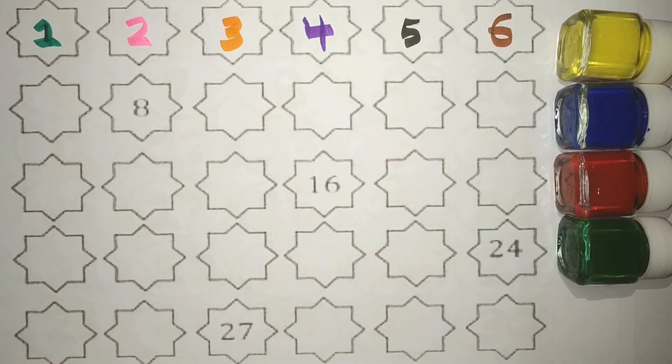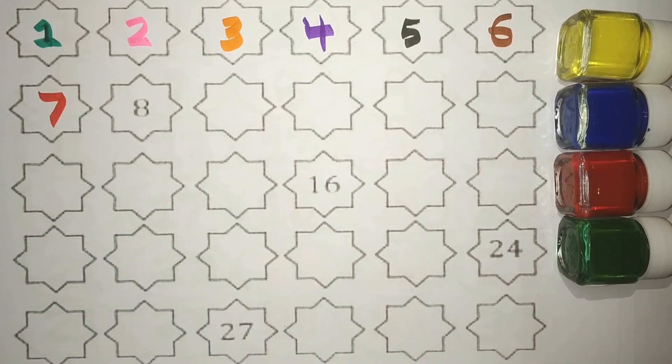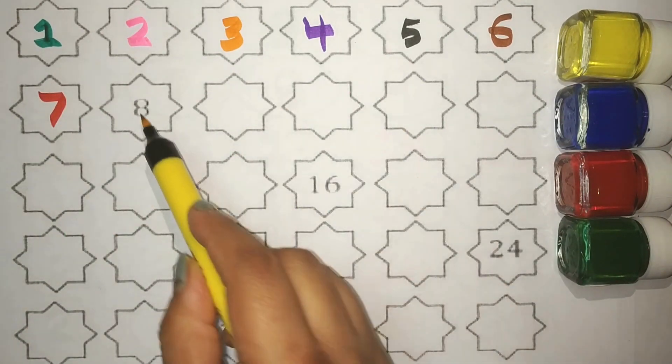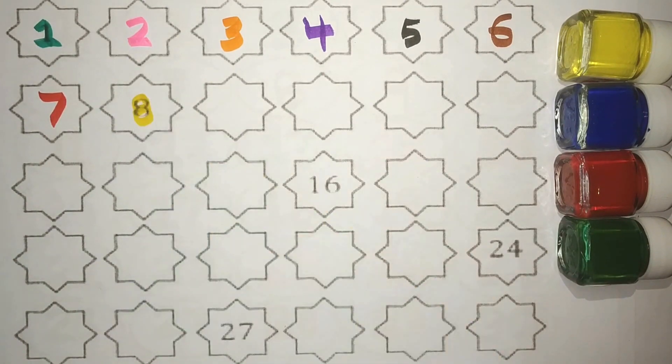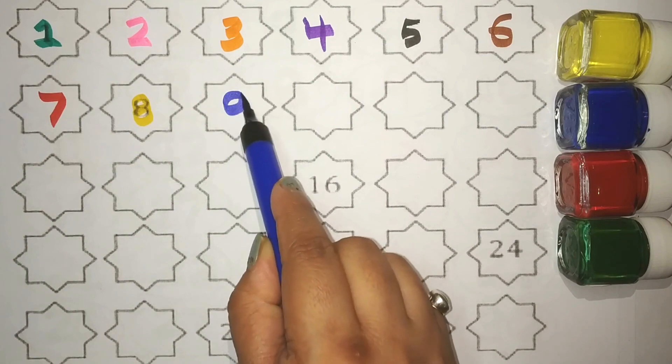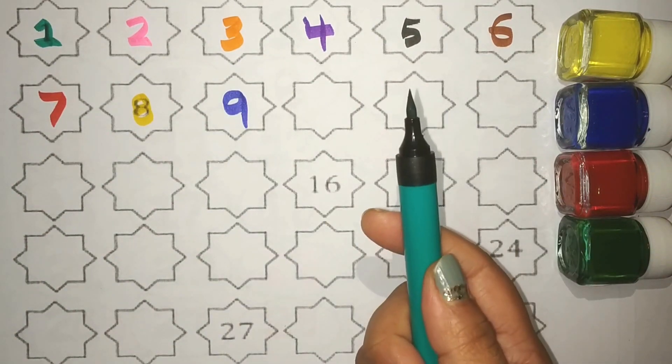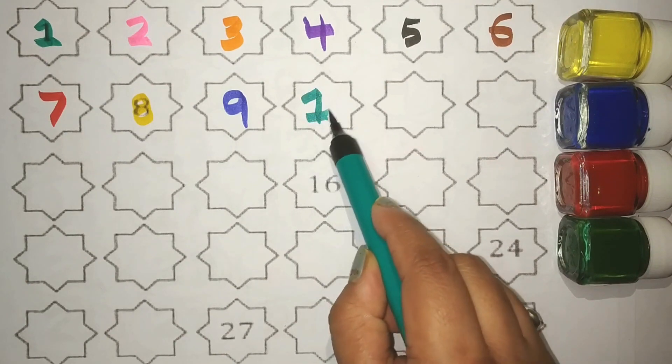Brown 6, Red 7, Yellow 8, Blue 9, Green 1, 0, 10.